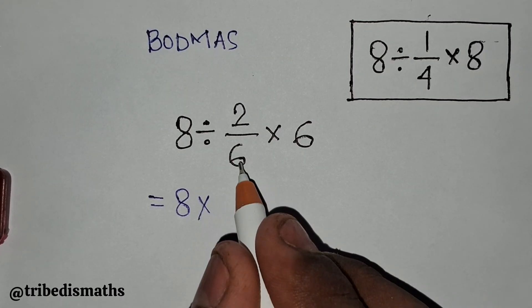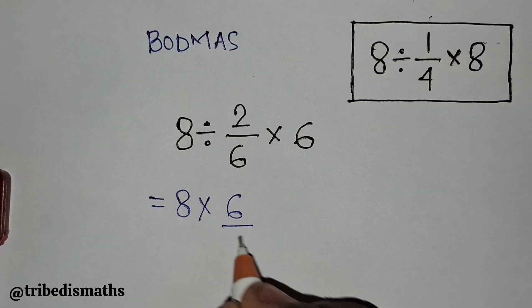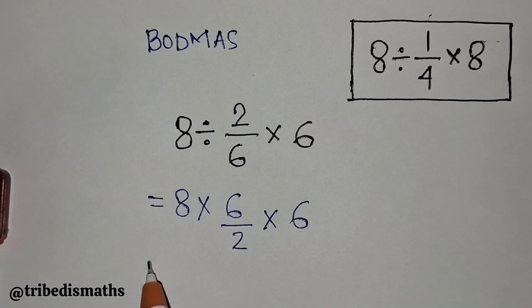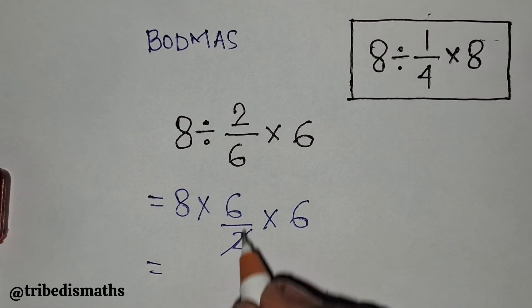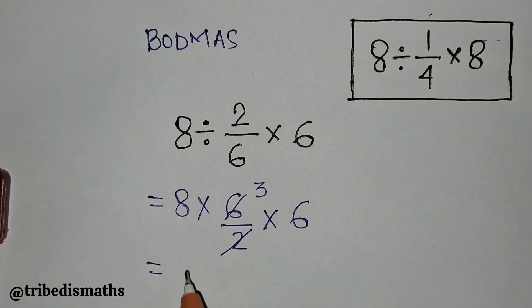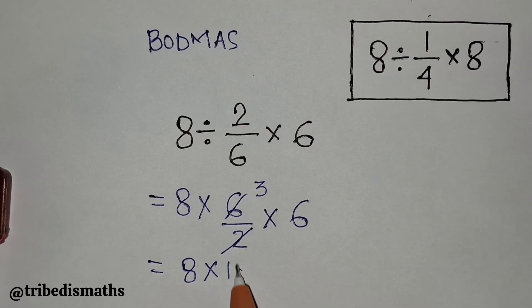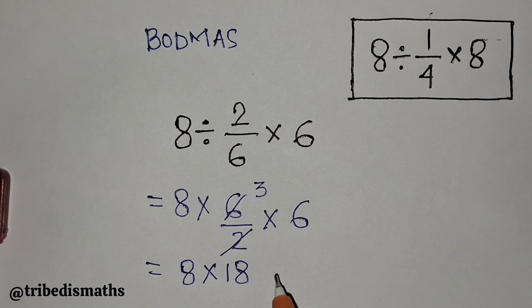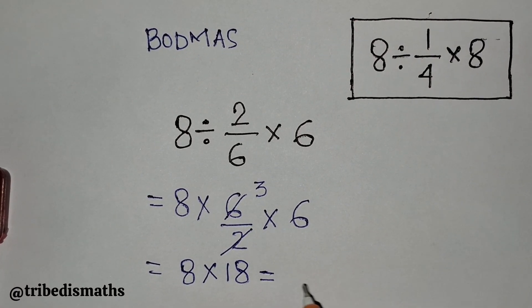Now let's solve it. 8 divided by 2/6 becomes 8 times 6/2 times 6, which equals 2 and 6 cancel to 3, so 8 times 18, which equals 144.